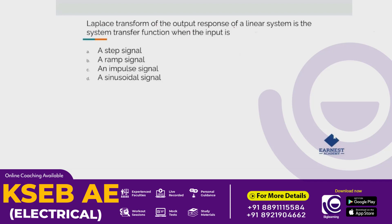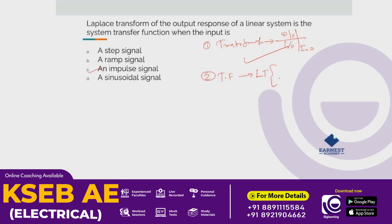The Laplace transform of the output response of a linear system divided by the system transfer function when input is applied — that is the transfer function. Transfer function is defined as the Laplace transform of output divided by Laplace transform of input with initial conditions equal to zero. Additionally, the transfer function is the Laplace transform of the impulse response.